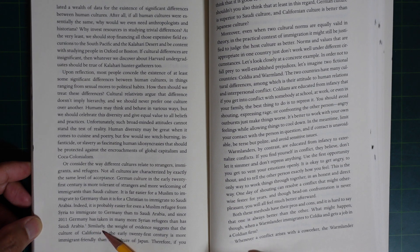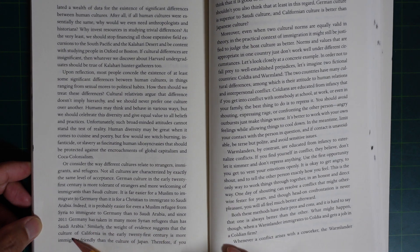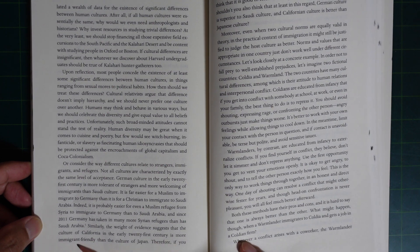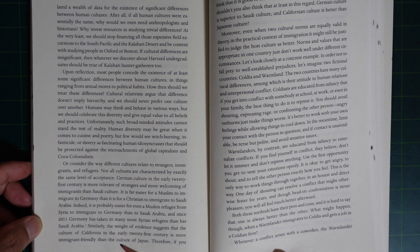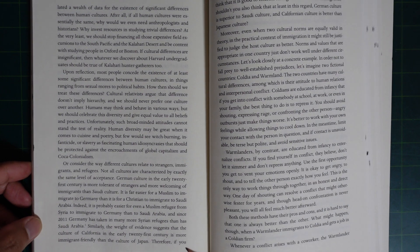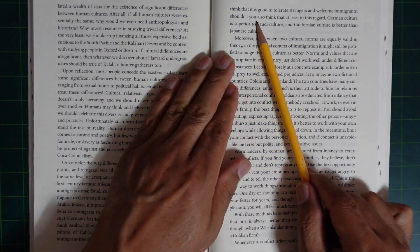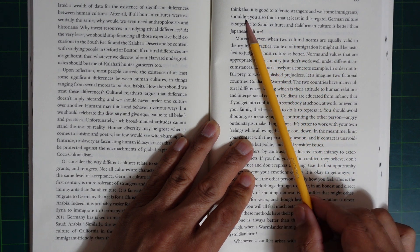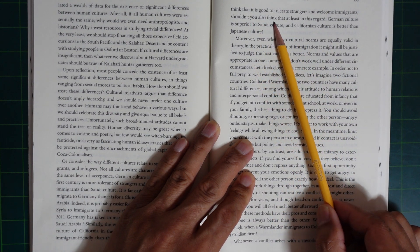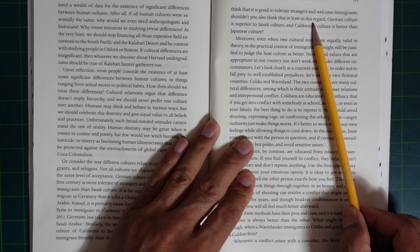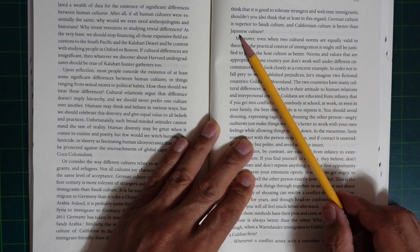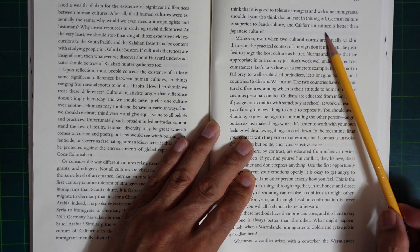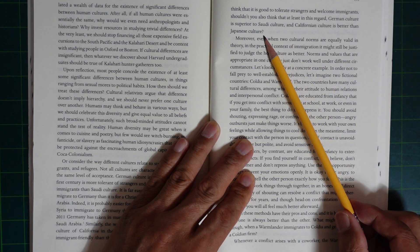Similarly, the weight of evidence suggests that the culture of California in the early 21st century is more immigrant-friendly than the culture of Japan. Therefore, if you think it's good to tolerate strangers and welcome immigrants, shouldn't you also think that, at least in this regard, German culture is superior to Saudi culture and California culture is better than Japanese culture?